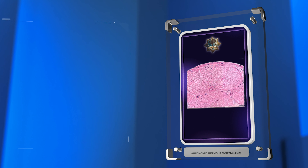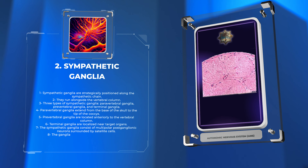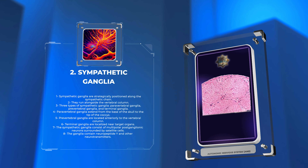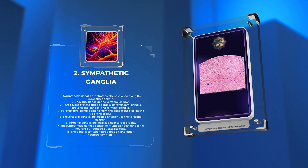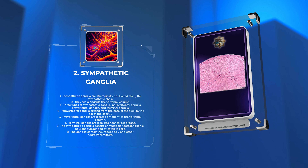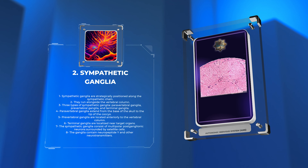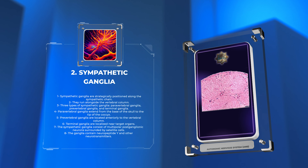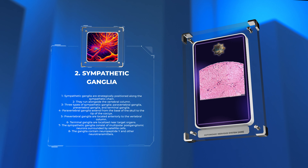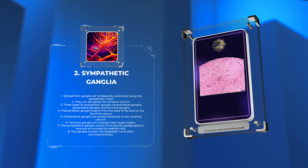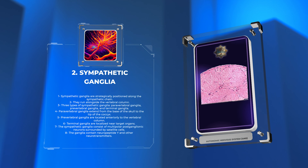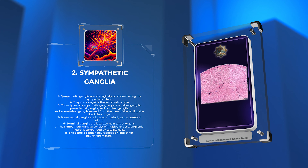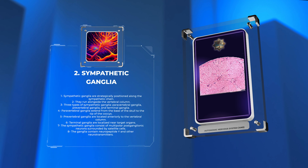Sympathetic ganglia are strategically positioned along the sympathetic chain, which runs alongside the vertebral column. These ganglia can be classified into three types: paravertebral ganglia, prevertebral ganglia, and terminal ganglia. Paravertebral ganglia are located bilaterally and extend from the base of the skull to the tip of the coccyx. Prevertebral ganglia are located anteriorly to the vertebral column, while terminal ganglia are localized near target organs. The sympathetic ganglia consist of multipolar postganglionic neurons surrounded by satellite cells, providing structural and metabolic support. Immunohistochemical staining reveals the presence of neuropeptide Y and other neurotransmitters within the ganglia.